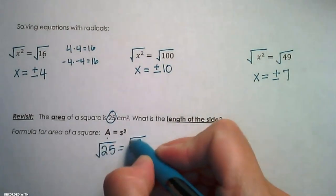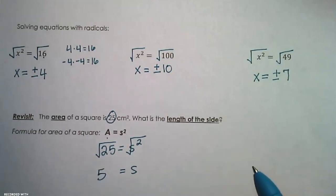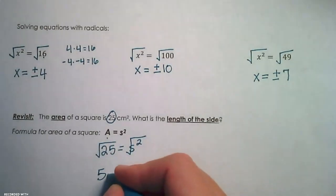We take the square root of both sides, and we get that the side is equal to... Now in this example, we're looking for a measurement, so we're not going to use that negative root. We're only going to use the principal root of 5, and that would be 5 centimeters.